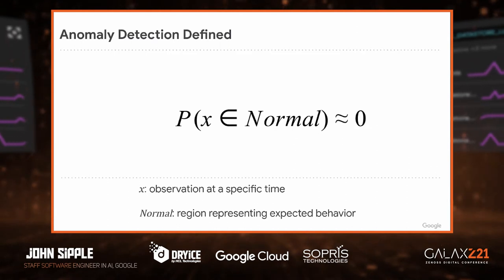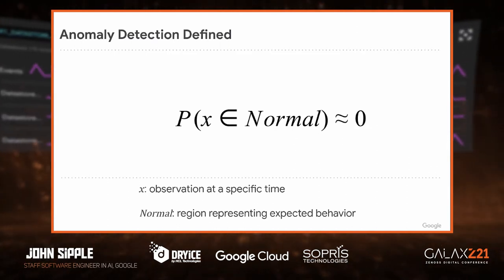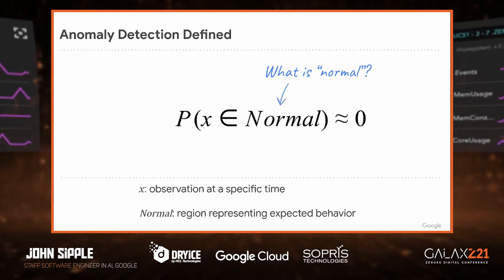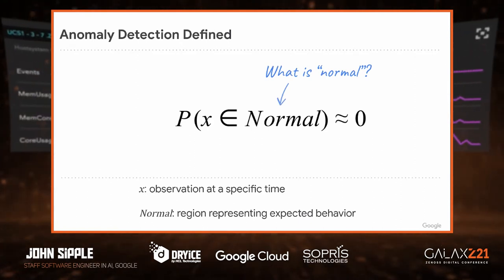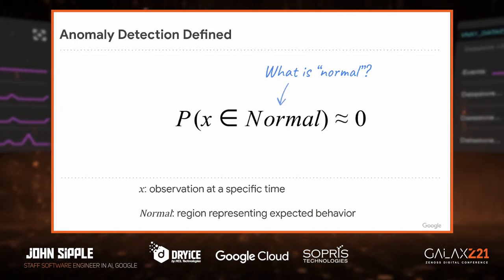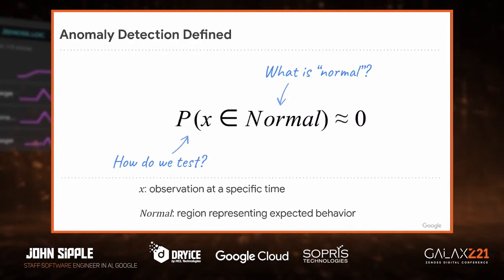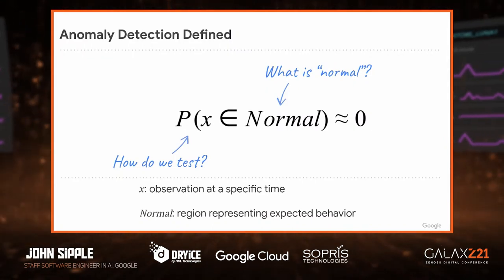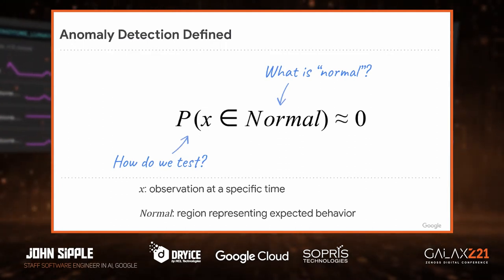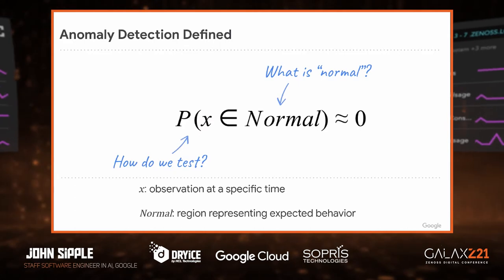That's the most general-purpose definition of anomaly detection, and there are certain questions that need to be answered for any implementation. The first question is: how do you define what normal is? Normal can be as simple as an average and a standard deviation, or it can be much more sophisticated based on neural networks or support vector machines. The next question is: how do you test normal? If your version of normal is just a standard deviation and an average, you can use a Gaussian approximation and come up with a probability that way.